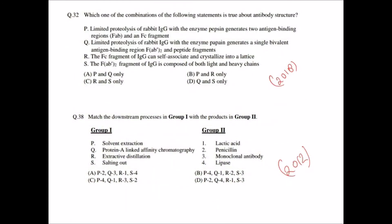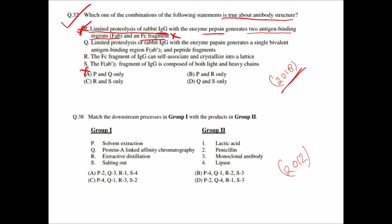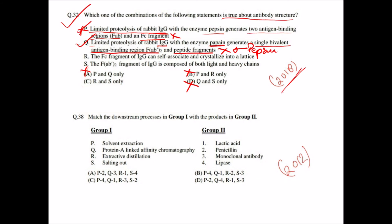A GATE 2018 question asks which combination of statements is true about antibody structure. Statement one says limited proteolysis of rabbit IgG with pepsin generates two antigen-binding Fab regions and an Fc region — this is wrong, because two Fab fragments and a whole Fc fragment are generated by papain, not pepsin. Options A and B are therefore eliminated. Statement two says limited proteolysis of rabbit IgG with papain generates a single bivalent F(ab')2 and peptide fragments — this is also wrong, as that is the result of pepsin digestion, eliminating options D as well.